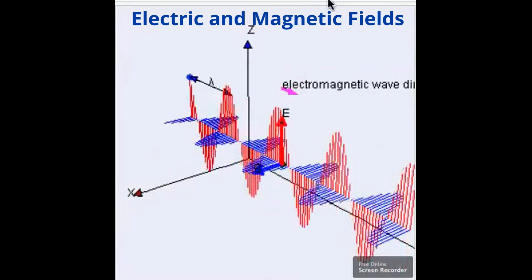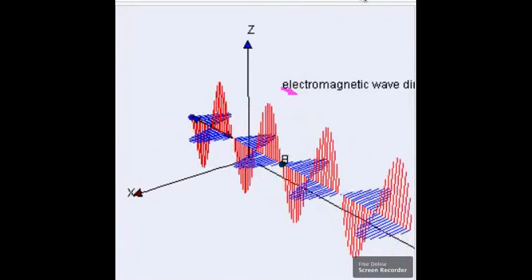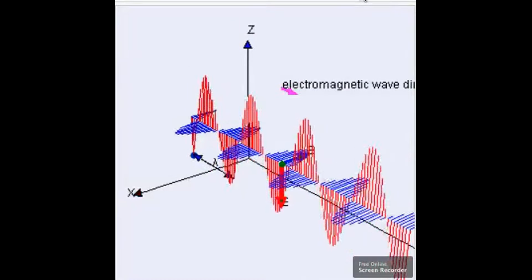The electric field and the magnetic field of an electromagnetic wave are perpendicular, or at right angles, to each other. They are also perpendicular to the direction of propagation of the wave.